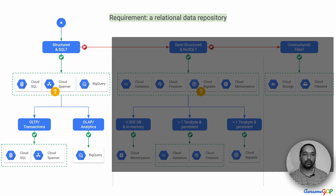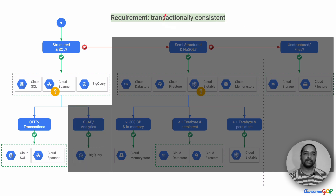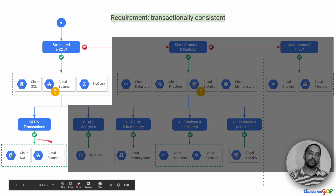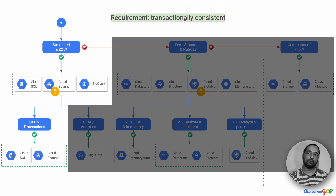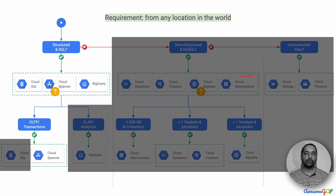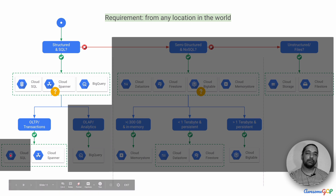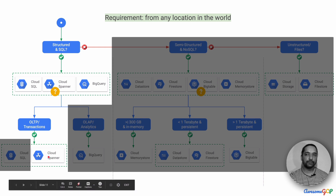Let's use this opportunity to learn more about the requirements where Cloud Spanner would be useful. The second requirement says it should be transactionally consistent — we are typically thinking of an OLTP. The primary choices for transactionally consistent databases are Cloud SQL or Cloud Spanner. The next requirement is that data should be accessible from any location in the world. Between Cloud SQL and Cloud Spanner, Cloud Spanner is the one that scales globally — Cloud SQL does not. Therefore, all requirements considered, Cloud Spanner is the right choice for the storage technology.